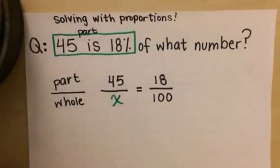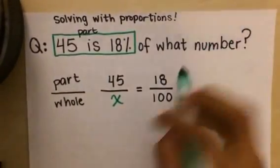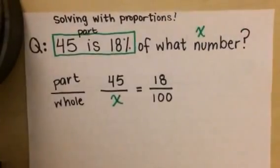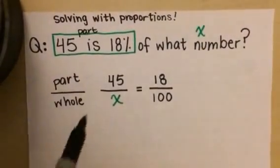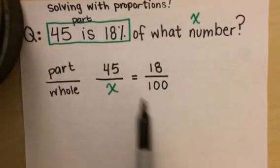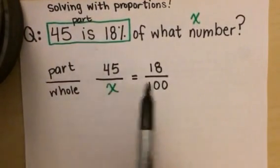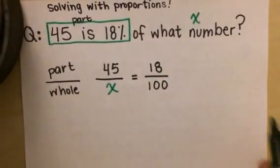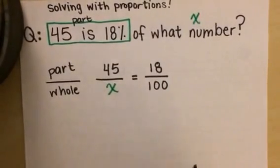That number, since we don't know what it is, we use a variable to represent it—we use the variable x. So it's the whole and we don't know what it is. Now that we have our proportion set up and we've identified that 45 is a part, all we need to do is solve for x. There are a lot of ways you could solve; today we're going to be doing the skill of cross